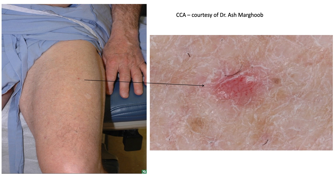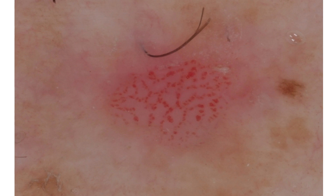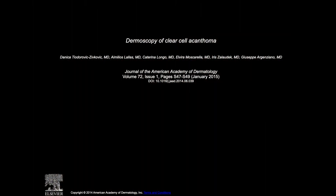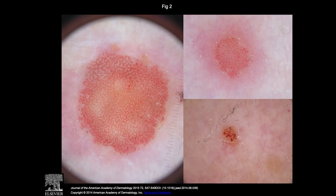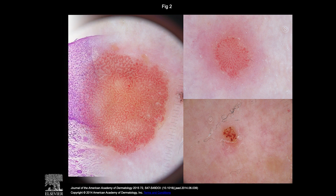Here is another case to take a closer look at, and again you can see a very nice string of pearls pattern — red pearls in a string — and that's the vascular pattern of a CCA. The dermoscopy of the CCA was described in a number of articles, and here's a good example of the clinical and dermoscopic showing that pattern of a string of pearls.